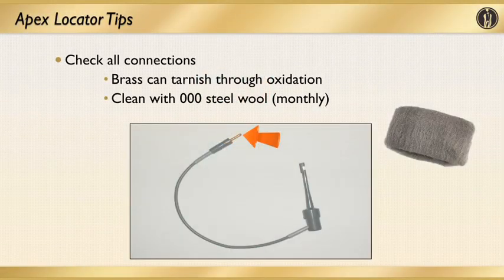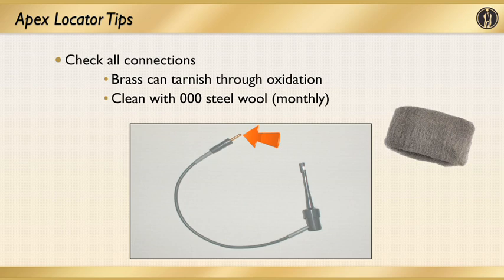The file clip that we use needs to be inserted into the lead from the apex locator. The tip of that file clip is made of brass. After numerous usings and sterilizations, you can get oxidation or corrosion on that brass tip. Just get a little piece of steel wool and clean it off, wipe it, and make sure it's clean before you put it in there. You want all your connections to be proper in order to make this apex locator work the way you want it to.